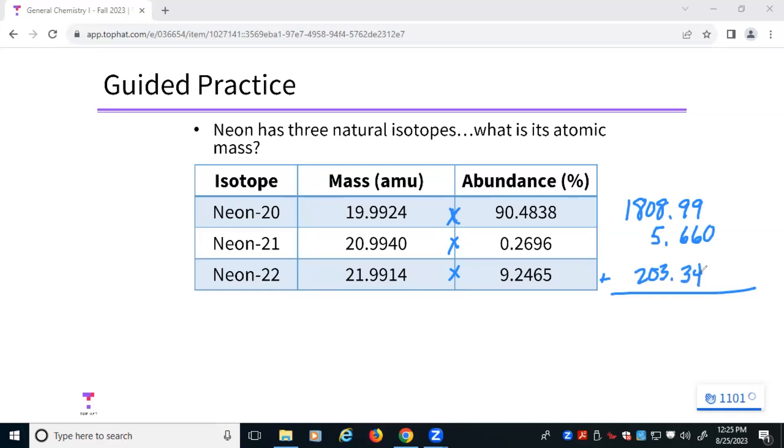My next step, now I've got all of the multiplication done. I need to add these together. So 1808.99 plus 5.660 plus 2.0334 is 2017.990. Now, here's where we can get a little bit confused.